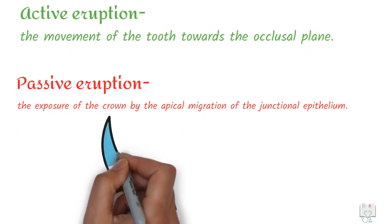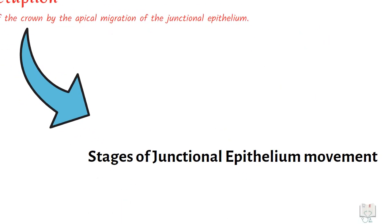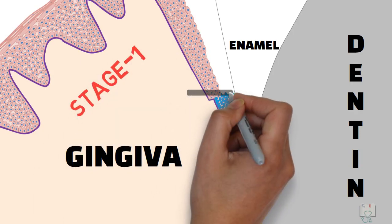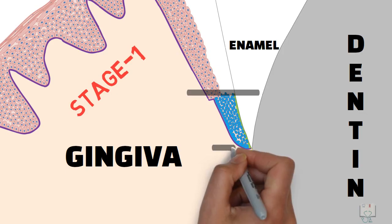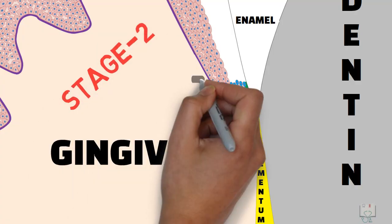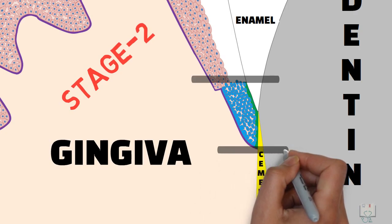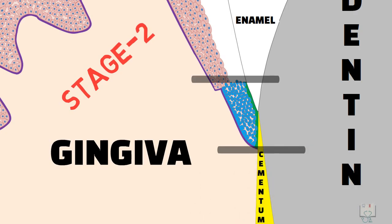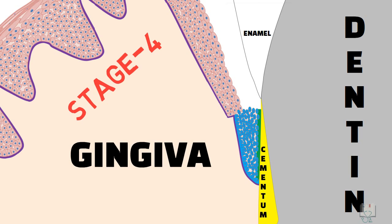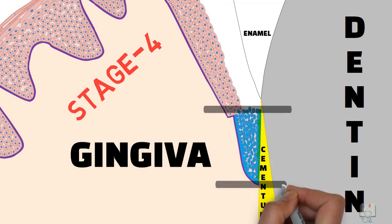This movement of the junctional epithelium on the tooth during tooth eruption has been divided into four stages. First stage: the bottom of the gingival sulcus is on the enamel and the apical end of the junctional epithelium is at the cement-enamel junction. Second stage: the bottom of gingival sulcus is still on enamel and the apical end of the junctional epithelium has shifted onto the cementum. Third stage: the bottom of the gingival sulcus has shifted to the cement-enamel junction and the apical end of the junctional epithelium is on the cementum. Fourth stage: both the bottom of the gingival sulcus and the apical end of the junctional epithelium are on the cementum.